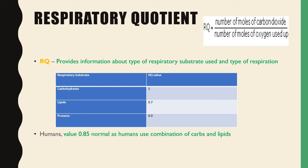Now we're going to move on to the Respiratory Quotient, or RQ. The equation is the number of moles of CO2 produced divided by the number of moles of oxygen used up. RQ provides information about the type of respiratory substrate used and the type of respiration. The different respiratory substrates are carbohydrates, lipids, and protein. The RQ value for carbohydrates is around 1, for lipids about 0.7, and for protein about 0.9. In humans, a value of about 0.85 is normal, as humans use a combination of carbohydrates and lipids.